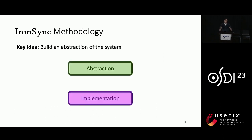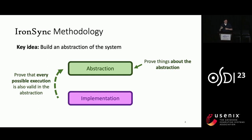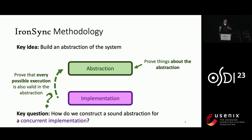To start, I'll go into some depth on the IronSync methodology itself. Basically, it starts with some implementation, and we're going to build an abstraction of the implementation and then prove things about the abstraction, which we expect to be easier than proving things about the implementation directly. Of course, for this to make any sense, we have to make sure that the abstraction is sound — that every possible execution of the implementation is represented in the abstraction. So the main question is how do we build such an abstraction in a way that's useful for handling concurrent systems?